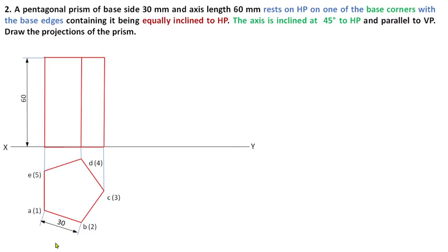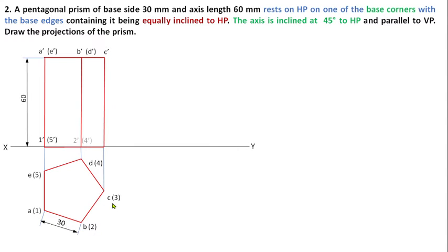An observer is standing here. From this position you can clearly say which corners are visible. A, B, C is visible in the top face; D and E are invisible, so A dash and E dash would be in brackets. B dash is visible, D dash invisible, C dash is visible. For the base 1, 2, 3 will be visible and 5 and 4 are invisible, denoted in brackets. In the front view it is 1 dash to 5 dash.